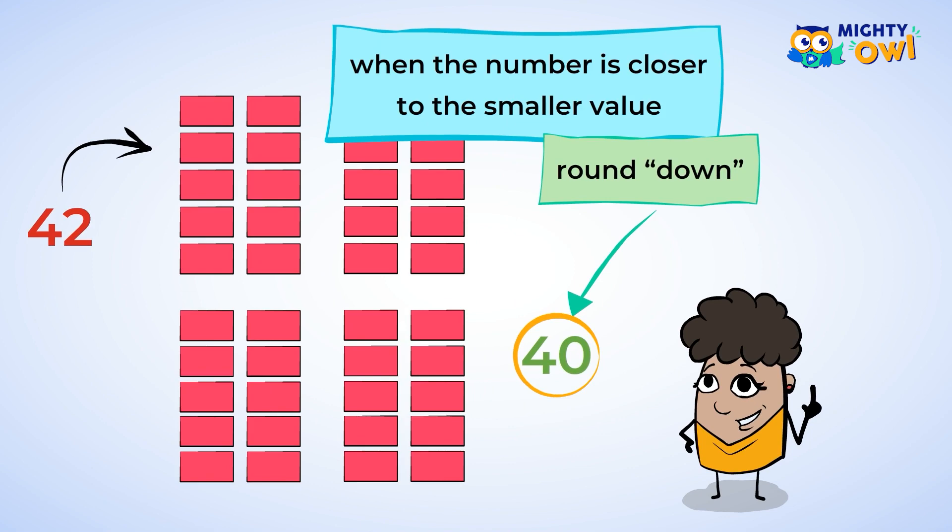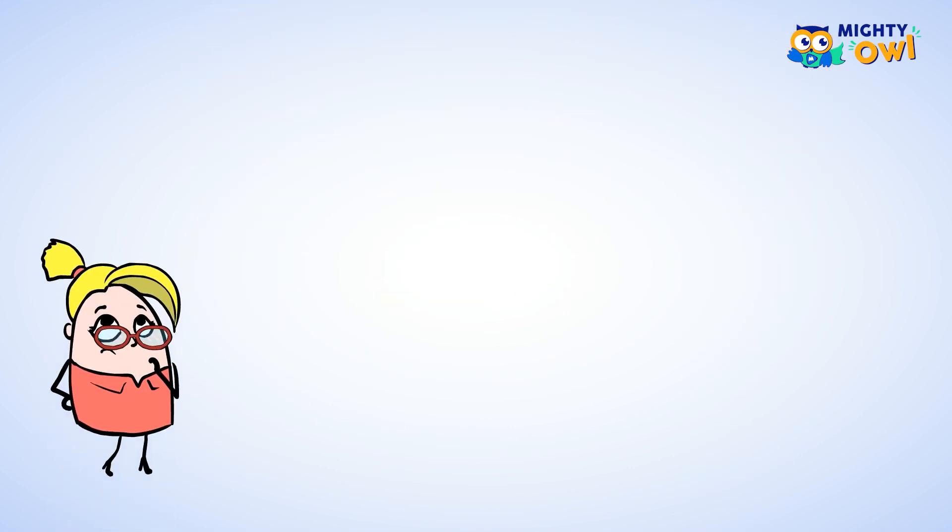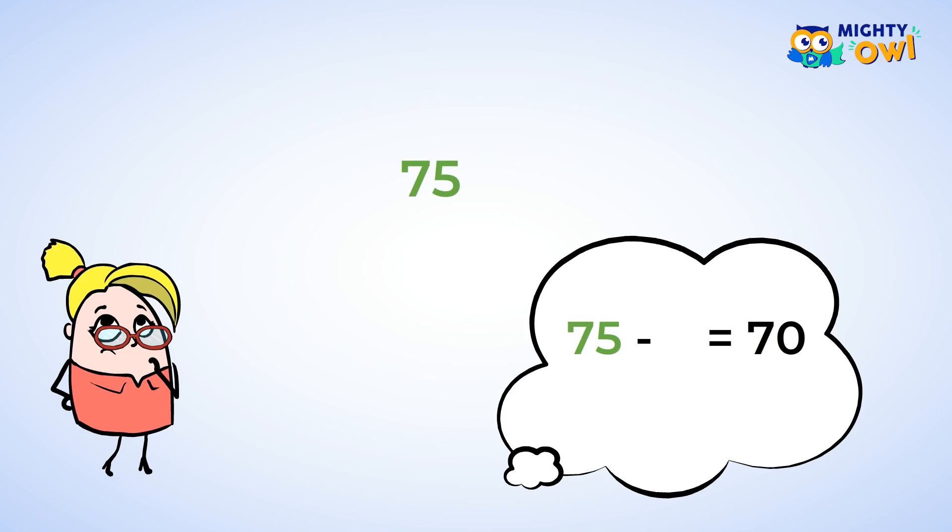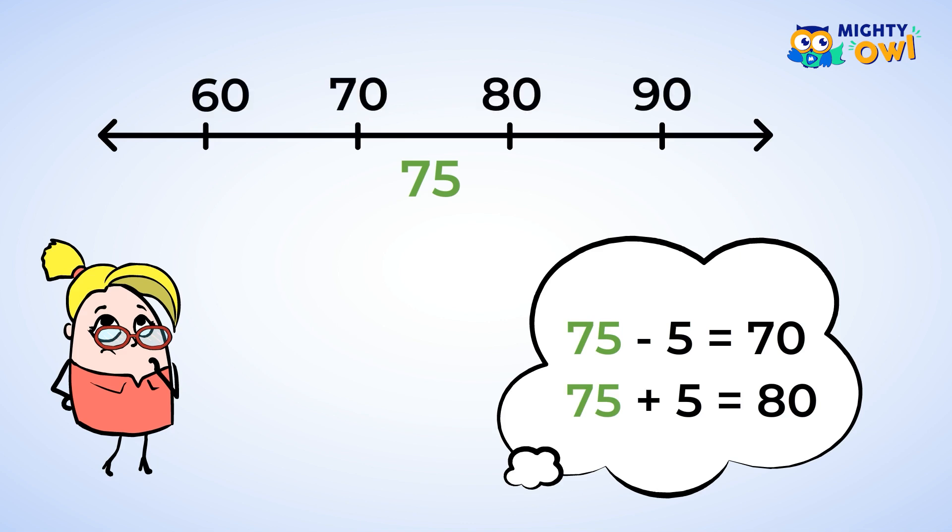But what if the number has a five in it? This is a little trickier. 75 is seven tens and five ones. In order to change it to 70, you would have to take away five ones. Or you could also add five ones to make it 80. Looking on a number line, 75 is exactly in the middle of 70 and 80.